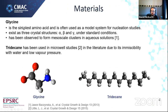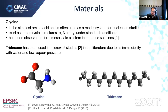Our molecule of choice is glycine, the simplest amino acid, commonly used for these types of nucleation studies. It's very well studied, easy to handle, and has a range of interesting properties — it's polymorphic, existing as three different crystal structures under standard conditions, and has been observed to form mesoscale clusters in aqueous solution, making it an interesting choice when considering two-step nucleation versus classical nucleation theory. We chose tridecane as our liquid-liquid interface due to its immiscibility with water and low vapor pressure.